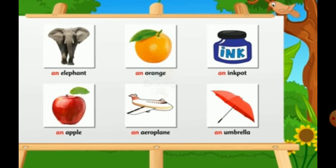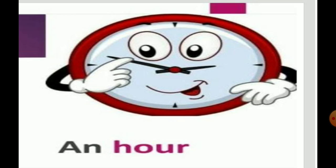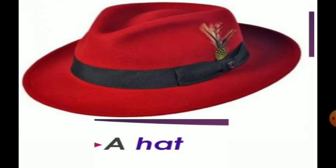Sometimes a word may begin with a consonant, but we use AN before it. Do you know why this happens? Let's see. Sometimes words that begin with consonant H have a vowel sound, or H is silent — we use AN before such words. For example, in the word 'hour', H is silent and it begins with a vowel sound, so we use AN before it: an hour. Whereas the word 'hat' also begins with consonant H, but when we pronounce 'hat', we get the sound of H. So we use A before it: a hat.